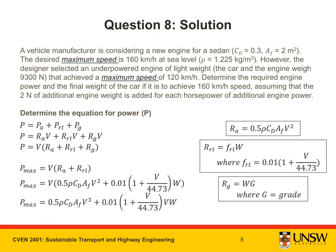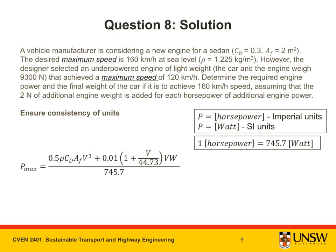Here we have our working out from the previous slide typed up. Now that we have P_max, we also need to ensure that we are using consistent units. Because the relationship that we were given, which gave us the equation change in P equals half change in W, has P in terms of horsepower and W in terms of Newtons.